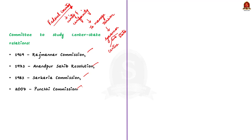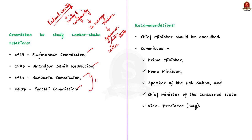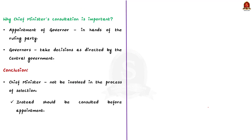Both the Sarkaria Commission and the Punchi Commission recommended that the chief minister should be consulted before appointing the governor for proper working of the parliamentary system. They recommended that the appointment of governor should be entrusted to a committee comprising the Prime Minister, Home Minister, Speaker of the Lok Sabha, and Chief Minister of the concerned state, with the Vice President also possibly involved. The question is: should consultation with the chief minister before the governor's appointment be made mandatory?